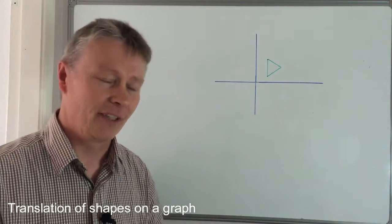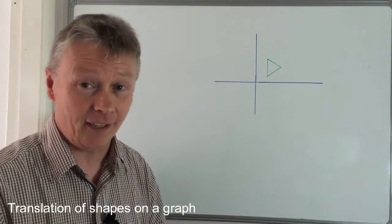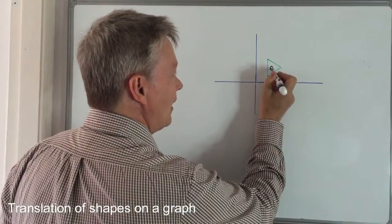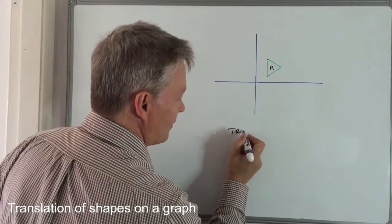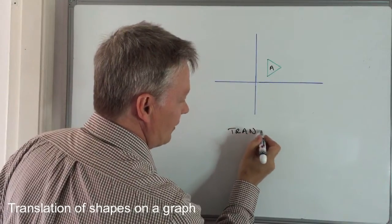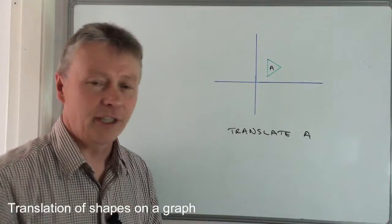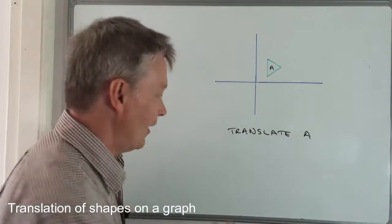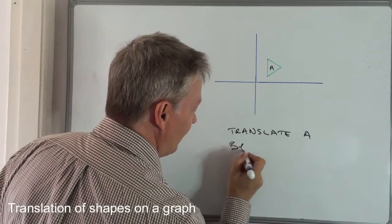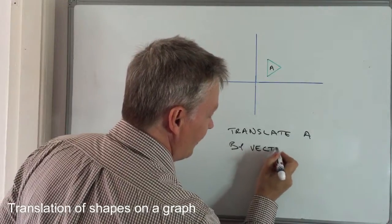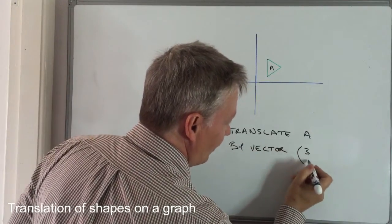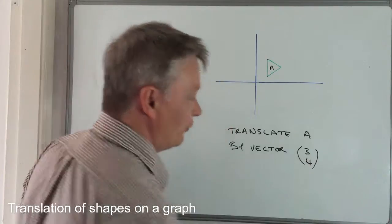Very typically the kind of question you're going to get in high school will say something like translate shape A, so translate A, and then it'll give you what's called a vector. By vector, it's written something like that, three, four.